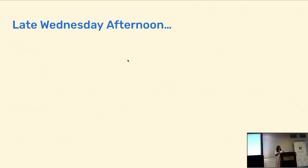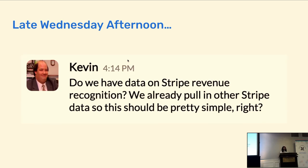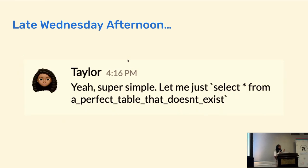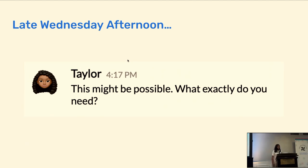Let's imagine it's late Wednesday afternoon. You finish all your meetings, you're kind of done your tasks for the day, and you're just about to pack up and go home. But right before you leave, you get this message from Kevin in accounting. Kevin says, 'Do we have any data on Stripe revenue recognition? We already pull in other data from Stripe, so this data should be pretty simple, right?' I'm sure many of you have gotten a request that should be pretty simple. You want to say you'll just select star from a table — but instead you send a nice message: 'It might be possible, but what exactly do you need?'